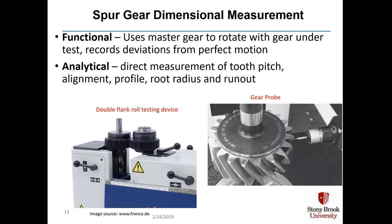Spur gear dimensions can be measured either functionally or analytically. Functional measurement uses a double flank roll testing device with a master gear that rotates with the gear under test, recording deviations from perfect motion — a perfectly manufactured gear will have perfectly smooth mating with the master gear. The analytical method takes direct measurements of tooth pitch, alignment, profile, root radius, and runout — basically anything measurable by touching the gear surface with a gear probe.